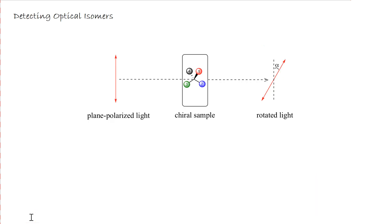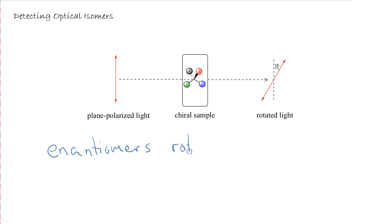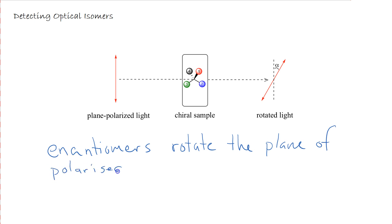The reason optical isomers are called optical isomers is due to the fact that if you were to shine a light source of plane polarised light towards a chiral sample and observe the light on the other side, passing the light through an enantiomer causes the light to be rotated by a given angle. So enantiomers rotate the plane of polarised light, which is useful because it gives us a way of measuring how much of an enantiomer we might have in a given compound.